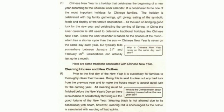The Chinese lunar calendar is based on the phases of the moon, which has a shorter cycle than the sun. Chinese New Year is never on the same day each year, but typically falls somewhere between January 21st and February 20th. Urdu: Chunke kumri calendar ki buniyad chand ki ashkaal par hoti hai, Chinese saal-e-no har saal ek din par nahi aata, magar aam taur par 21 January aur 20 February ke darmiyan aata hai. Celebrations can actually last up to a month.